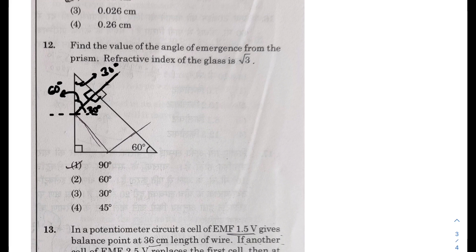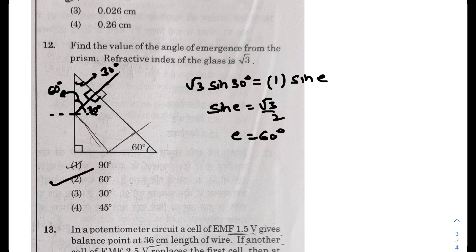So it will emerge from the other side and we apply Snell's law. Root 3 into sine of 30 degrees equals 1 into sine of emergence angle. So sine of emergence angle equals root 3 by 2. So E equals 60 degrees. So option 2 would be the answer.